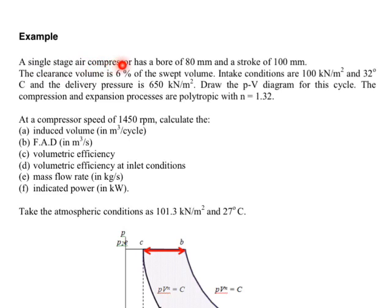In this case, we have a single stage compressor with bore 80 mm and stroke 100 mm. The clearance volume is 6% of the swept volume. Intake conditions are 100 kN/m² and 32°C, and the delivery pressure is 650 kN/m². You're asked to draw the PV diagram, and the compression processes are polytropic with n = 1.32.